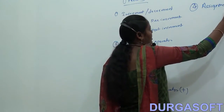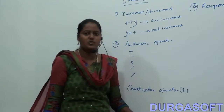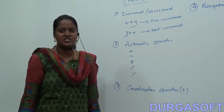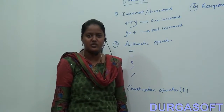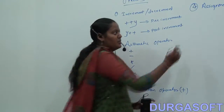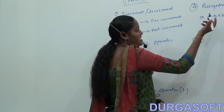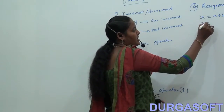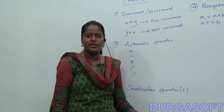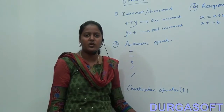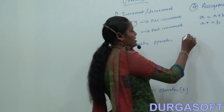The fourth one is the assignment operator. The assignment operator is used to reduce the code. For example, instead of writing `a = a + b`, you can write `a += b`. By using the assignment operator, you are going to reduce the code.